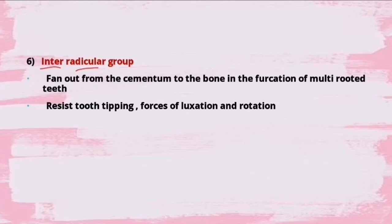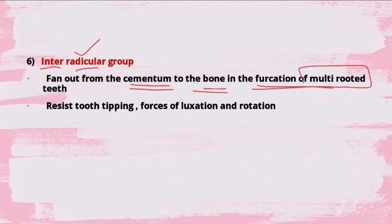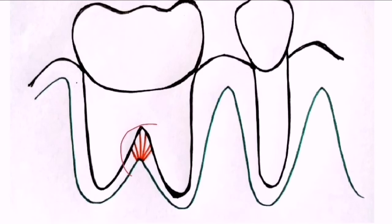The sixth group is the interradicular group. 'Inter' means in between, 'radicular' means the root - so they are found between the roots. They fan out from the cementum to the bone in the furcation of multi-rooted teeth, and they resist tooth tipping, forces of flexation, rotation, etc. They extend from the cementum to the alveolar bone in between the roots.